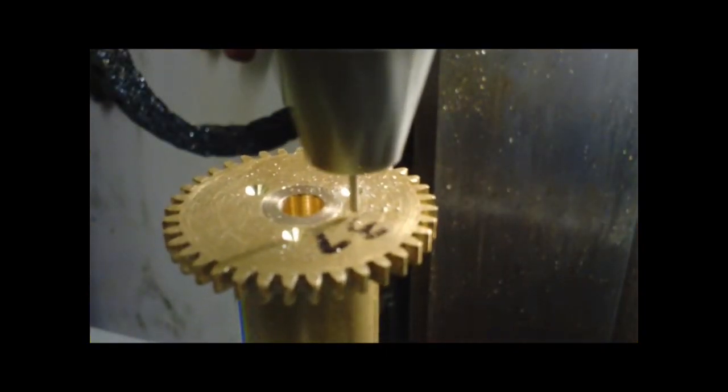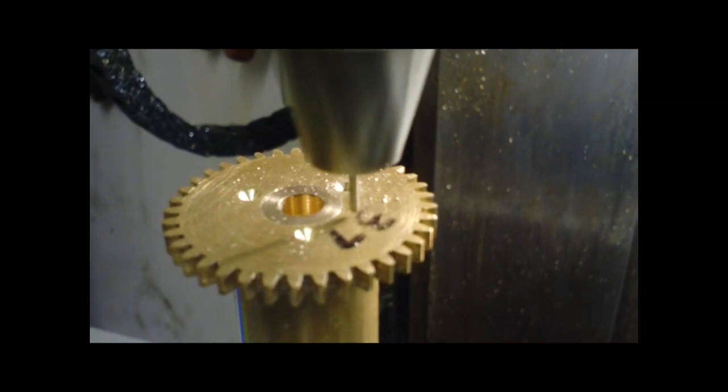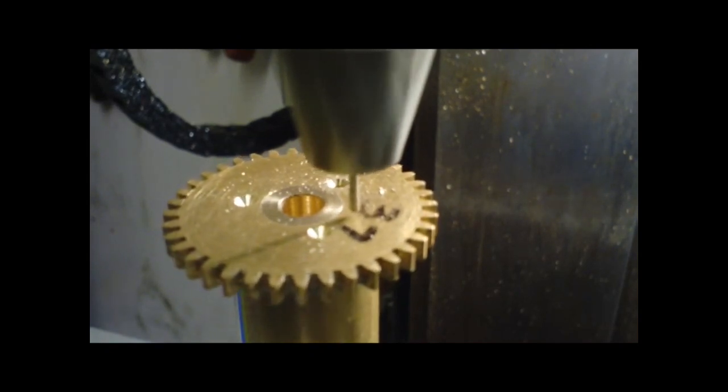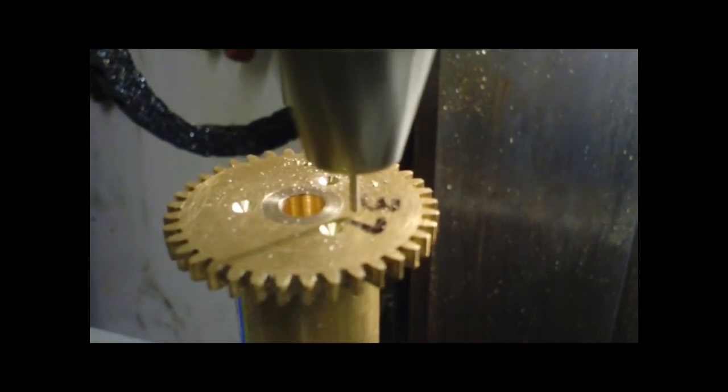Once it's been centre drilled I can then use my drill to drill straight through the wheel and through the collet ready so the collet can be tapped, in this case 12BA.